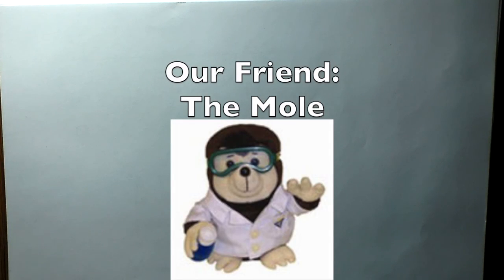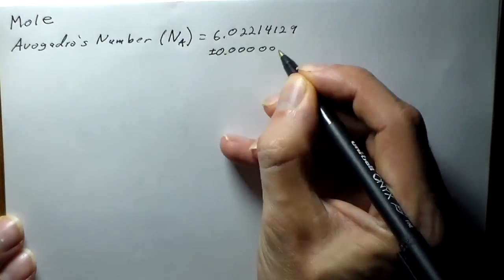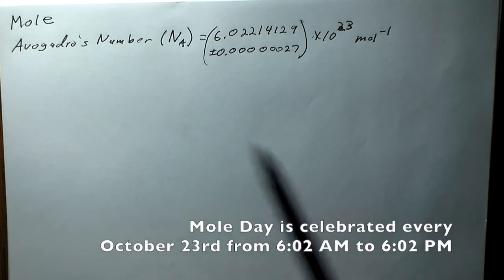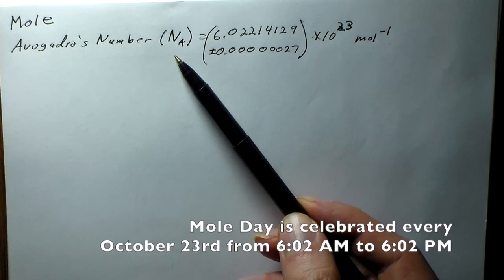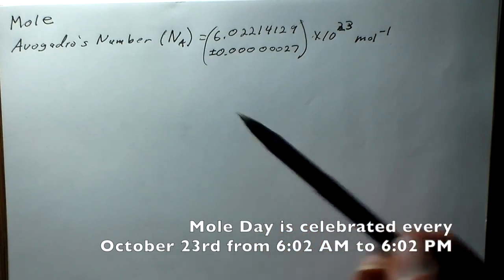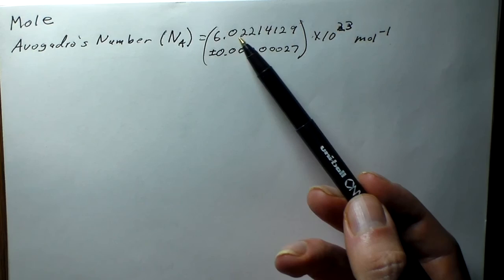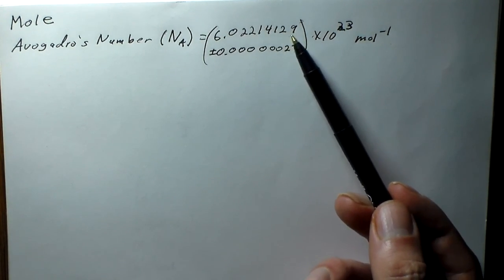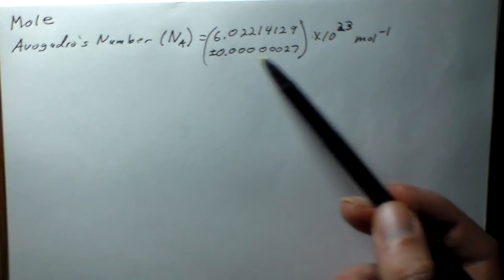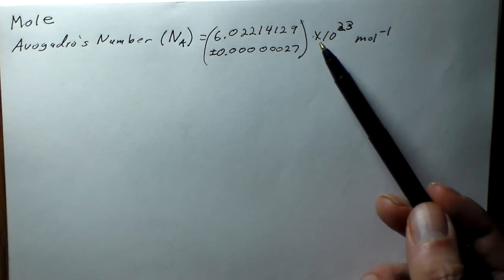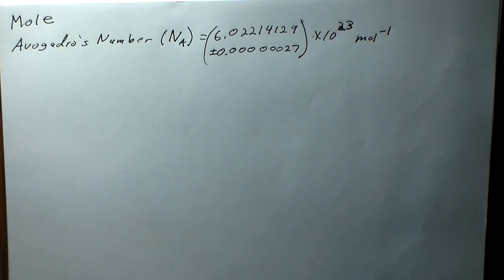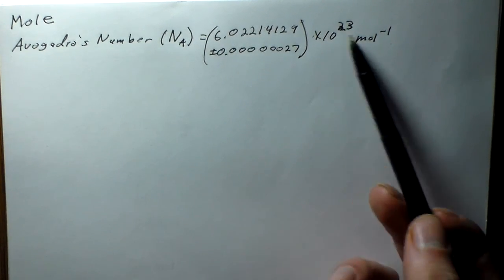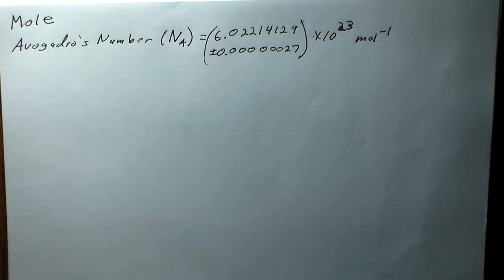Today we're going to be talking about the mole. There is one number that is very important when discussing the mole, and this is Avogadro's number, generally abbreviated N sub A, with a capital A so you don't confuse it with sodium. The value is 6.02214129 times 10 to the 23rd per mole. Generally we just approximate this as 6.022 times 10 to the 23rd per mole.